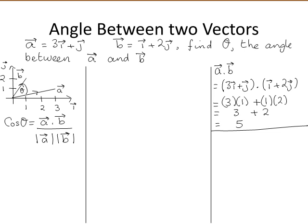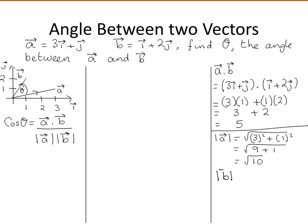Now we need the modulus of A and the modulus of B. The modulus of vector A is the square root of 3 squared plus 1 squared, equal to the square root of 9 plus 1, which is the square root of 10. The modulus of vector B, where B is 1i plus 2j, is the square root of 1 squared plus 2 squared, equal to the square root of 1 plus 4, which is the square root of 5.